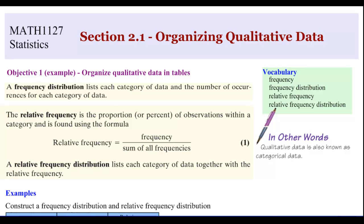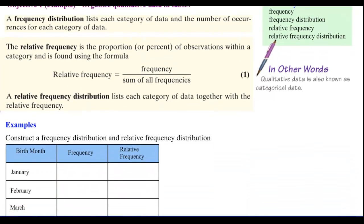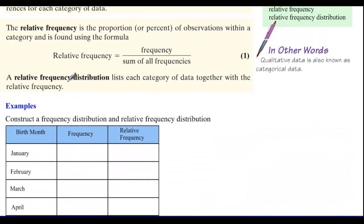So again, a frequency distribution is where we categorize data and say how many times something occurred in each category. The relative frequency is the proportion, written as a decimal, percent, or fraction. A relative frequency distribution lists each category of data together with its relative frequency.